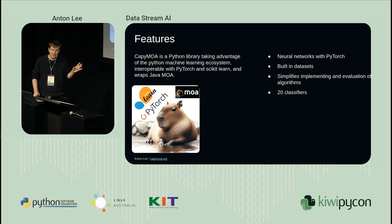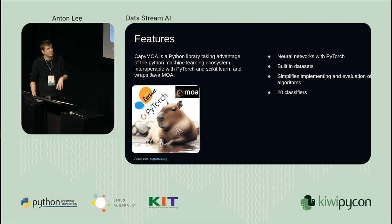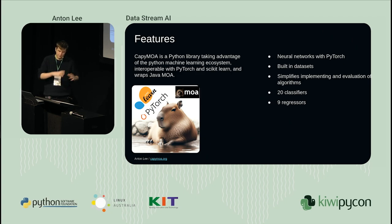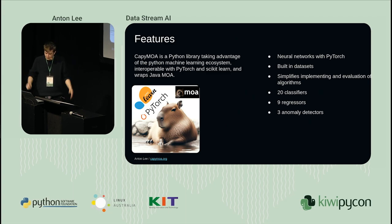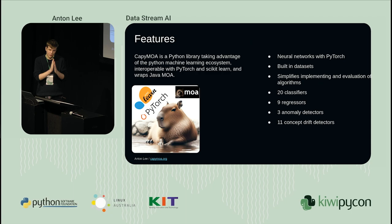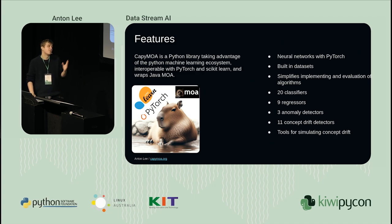Currently it has 20 classifiers - that's when you need to take an instance of data and classify it into groups, like is it a cat or is it a dog. It has nine regressors - that's when you have an instance and it has an associated value, like how expensive it is. We have three anomaly detectors for outlier detection - is this instance of data abnormal? And we have 11 concept drift detectors - methods for detecting when there's a change in the underlying relationships in the data. We also have some tools for simulating that.